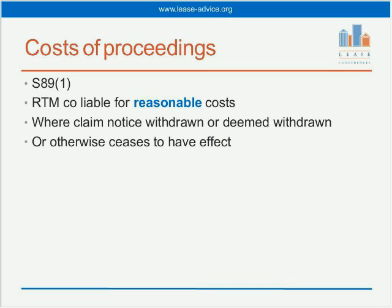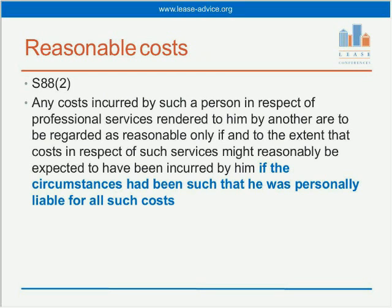There is also a cost liability where the claim notice is withdrawn, deemed withdrawn, or ceases to have effect. A claim notice is deemed withdrawn — for example — where the Right to Manage company didn't apply to the tribunal on time within the two-month deadline when validity of the claim notice was challenged. In those circumstances, the notice is deemed withdrawn and the RTM company is liable for the landlord's reasonable costs. Reasonable costs include legal expenses, solicitor costs, managing agent accountant fees for preparing accounts or transferring monies, handing over management records — all of which fall within professional services, but they must be reasonable.